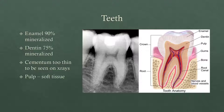Enamel is more mineralized than dentin, which is why it shows up as more white. But this material here that is completely white — I would call that completely radiopaque — that has to be some type of metal, and in this case we know it's likely an amalgam restoration. Enamel is sometimes 90 or 95% mineralized. Dentin is more similar to bone, where it's about 75% mineralized. Cementum follows the outline of the roots of the teeth, but you're not going to see it in x-rays — it's too thin.